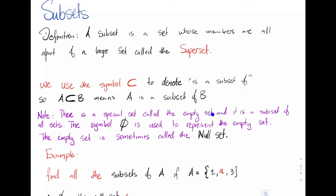Note that there's a special set called the empty set, which is the set that contains nothing, and it is a subset of all sets. We use the symbol ∅ to represent the empty set. The empty set is sometimes called the null set — empty set and null set are the same thing — and it contains no elements at all.